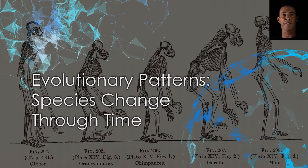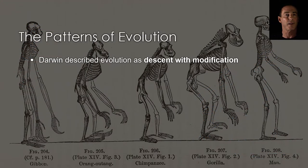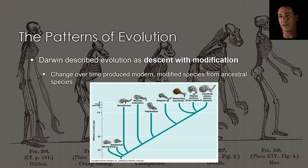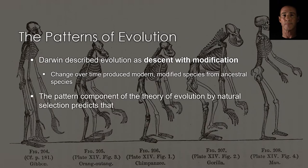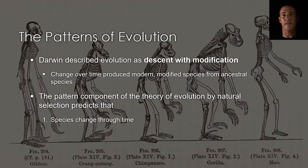The presence of vestigial traits in living organisms also gives an indication that species have changed in the past. Darwin repeatedly referred to evolution as descent with modification. This meant that species that lived in the past are the ancestors of species existing today and that species change through time. The theory of evolution by natural selection makes predictions about the nature of species. Let's explore the predicted evidence that species change through time.